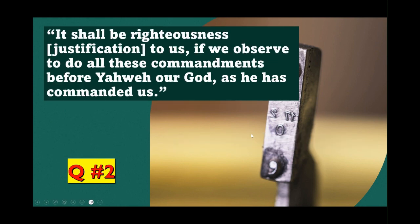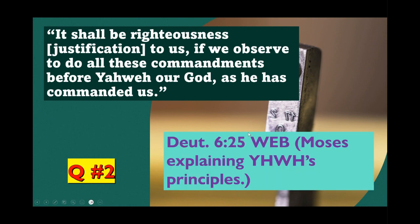Question two: Who said this? 'It shall be righteousness — or justification — to us if we observe to do all these commandments before Yahweh our God, as he has commanded us.' Is that Jesus, Paul, or Yahweh including Moses describing what Yahweh has said, or from the Psalms or Proverbs? Make a note of it. The answer is Deuteronomy 6 verse 25, World English Bible edition.